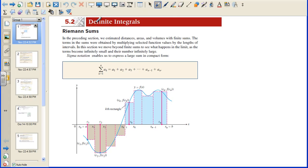This is section 5.2, Definite Integrals. We have Riemann sums. In the preceding section, we estimated distances, area, and volume with finite sums. The terms in the sums are obtained by multiplying selected function values by the lengths of intervals. In this section, we move beyond finite sums to see what happens in the limit as the terms become infinitely small and their number infinitely large. We start out with sigma notation that enables us to express a large sum in compact form.